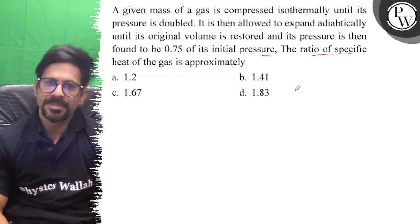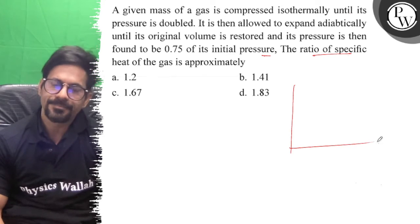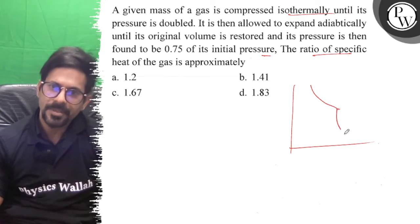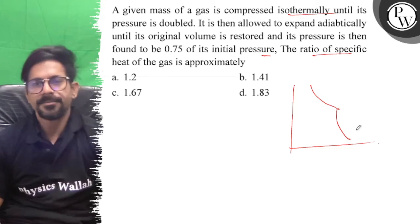We need to find the ratio of the specific heats (gamma). First, the process is isothermal compression, then it is adiabatic expansion.